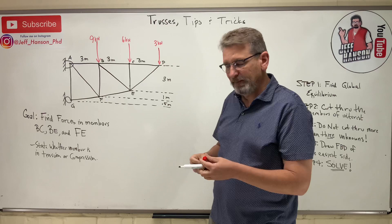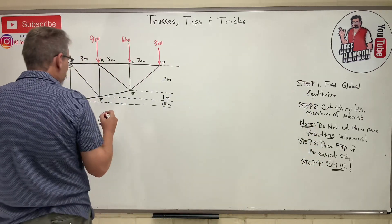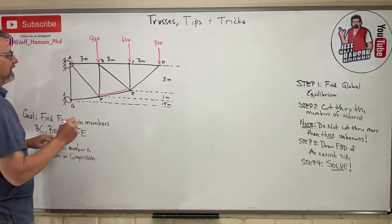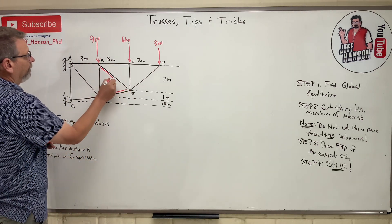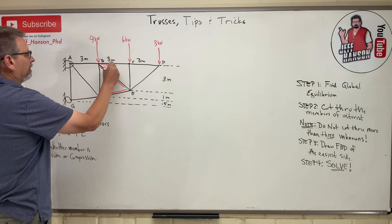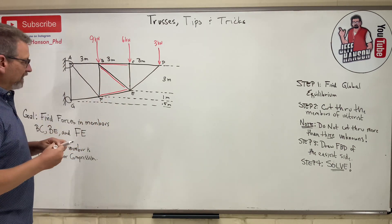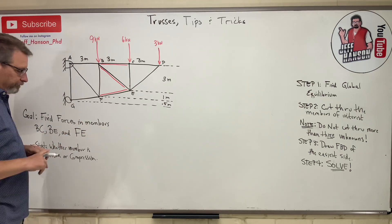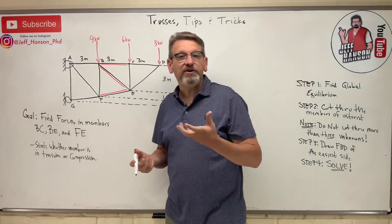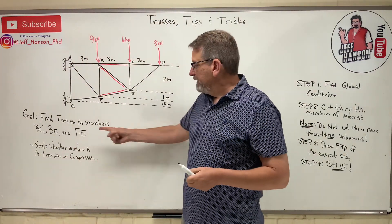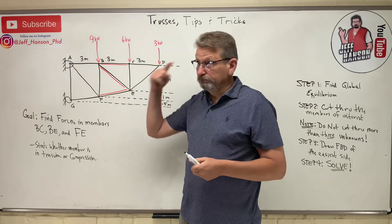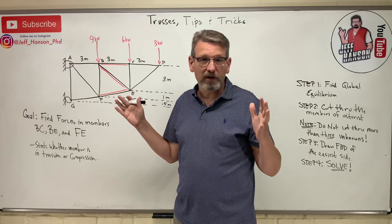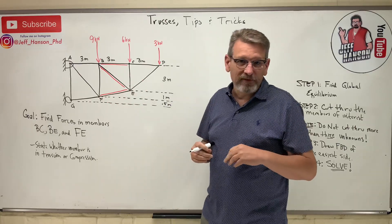Let's highlight them. Here is FE down here, and then BE, which is this guy, and then BC, which is this guy up here. The reason I do that is because I want to see those members that I'm going to cut through. How do I know the difference between the method of sections and the method of joints? Method of sections, if they ask me for specific members. If they ask me for every member in the truss, then I might as well just use the method of joints.